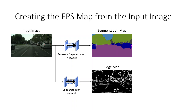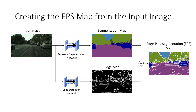Keep in mind that the edge map is different from a contour map — it also contains edges inside the object and the boundaries of objects are not guaranteed to be closed loops. The result is a black and white image where white pixels mark the edges. Finally, to create the EPS maps, both images are combined through addition of the pixel values with subsequent clipping to the valid range. Effectively, this means that the white pixels of the edge map overlay the segmentation map.